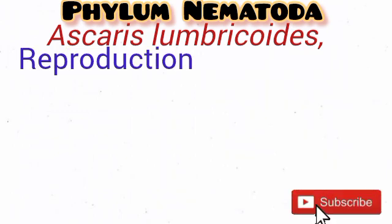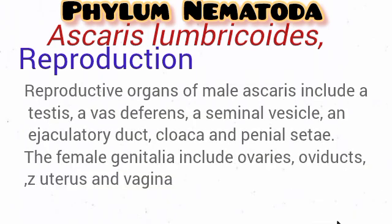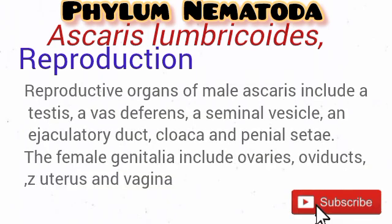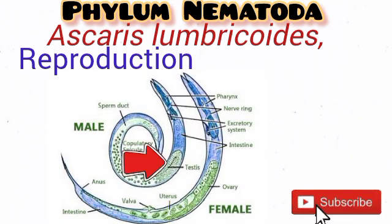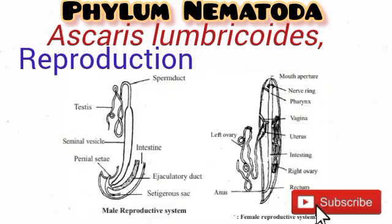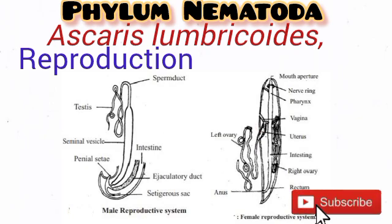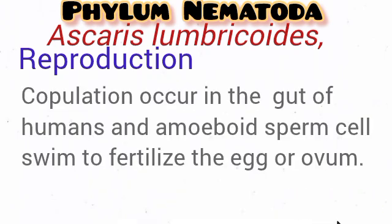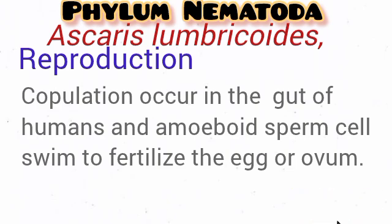How does this organism carry out reproduction? Ascaris carries out only sexual reproduction and sexes are separate. They exhibit sexual dimorphism. The male reproductive organs include the testis, the vas deferens, the copulatory spicules, and others. The female reproductive organs include the ovaries, the uterus, the oviduct, and others. Copulation in Ascaris occurs in the gut of humans, and they produce amoeboid sperm which swim to fertilize the ovum in the uterus.